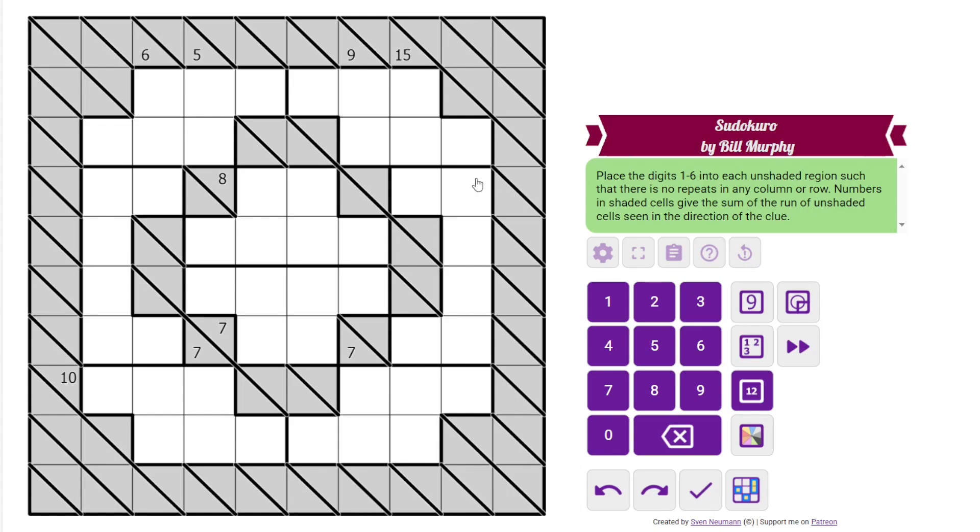Kuro is a type of puzzle where we have clues outside the grid that give sums, kind of like killer cages, but they can overlap. So these three cells sum to 10 from this clue, these two sum to 7, and this cell is part of both of those. Ordinarily with Kuro, the digits can't repeat in the cells seen by the clue, but they can repeat across gaps. So there could be a 1 here and a 1 here.